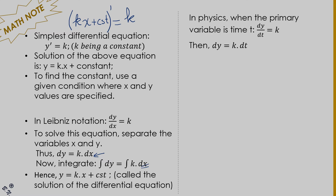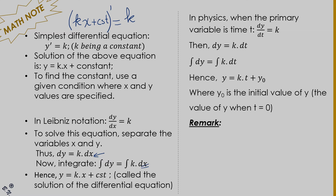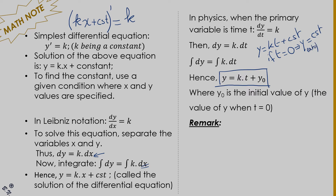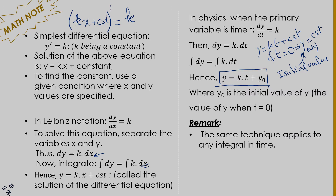In physics, instead of dy with respect to dx, we write dy/dt. We proceed the same way: dy equals k dt, integrate to get y equals kt plus y-zero. A nice feature in physics is that when you integrate, the constant is directly the initial value of the quantity at time zero — the initial condition.